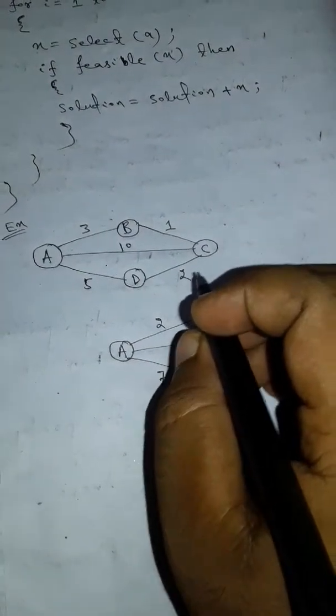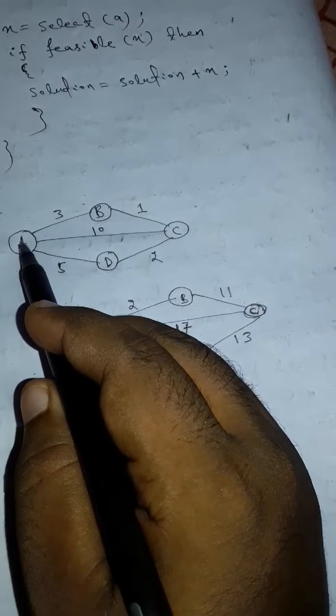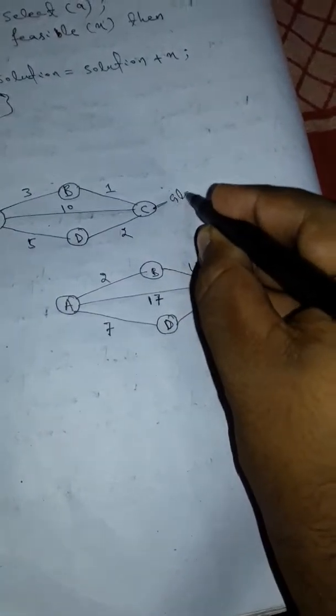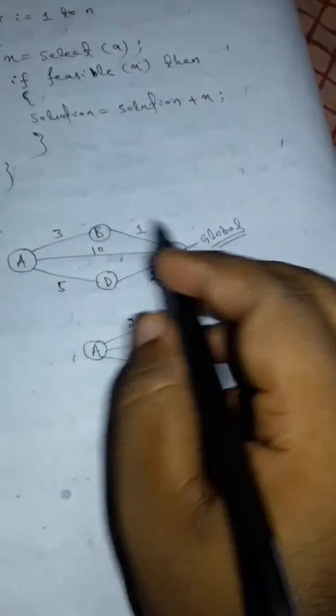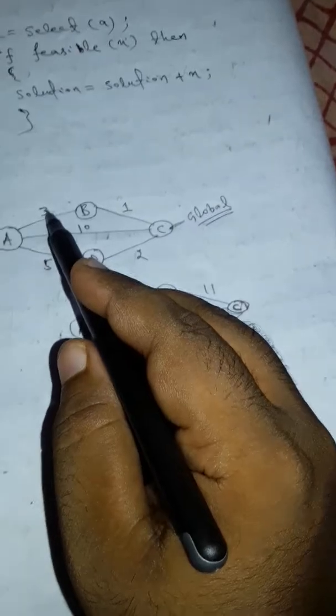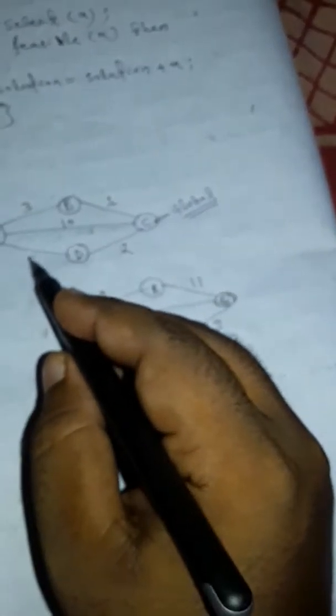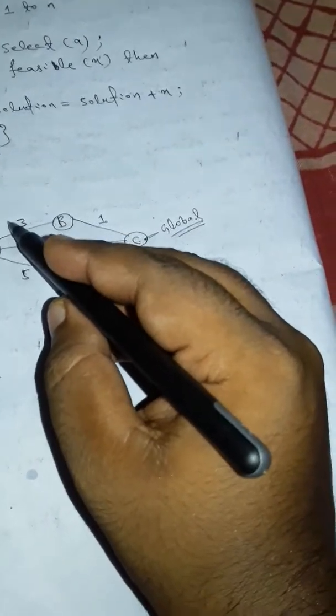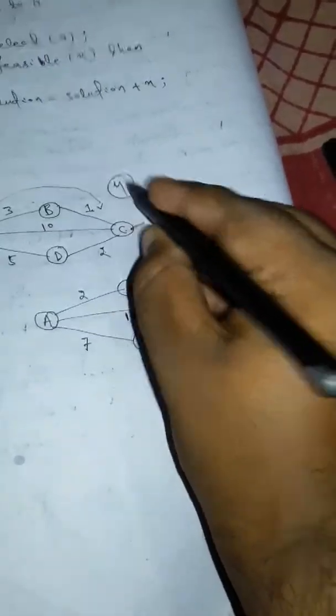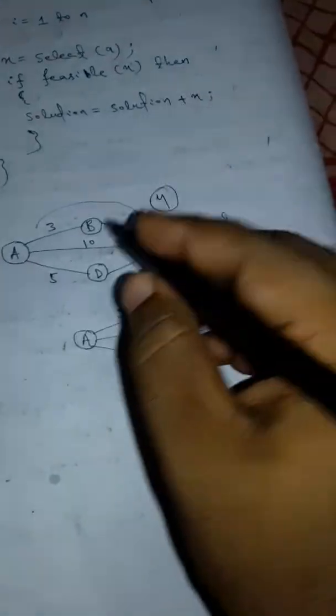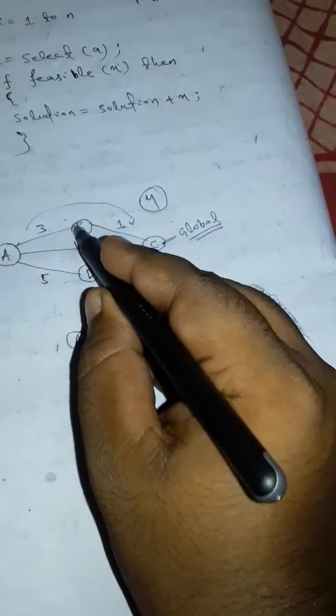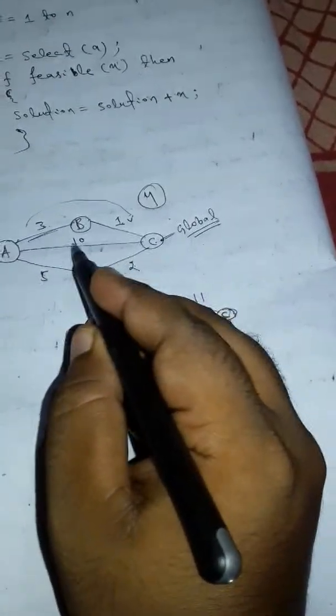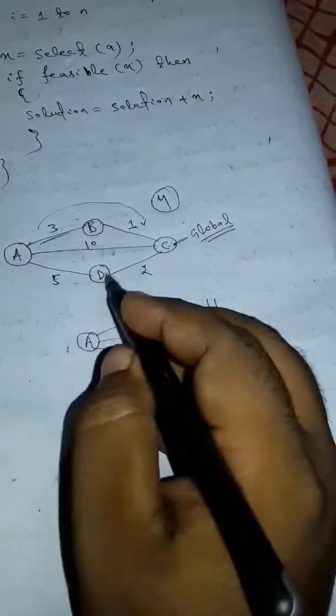This is an example to understand the greedy technique. We have to reach from node A to C node, which is the global solution. Let us count the weight of the edges: 3 plus 1 is 4, 5 plus 2 is 7, so it is 10. The best way to reach from A to C is 3 plus 1. Here the connection from A to B is 3, and direct A to C is 10, A to D is 5. So this is the best.